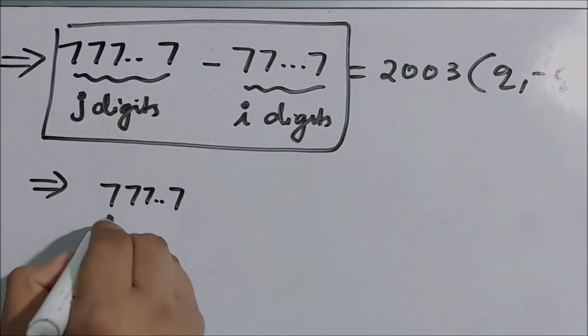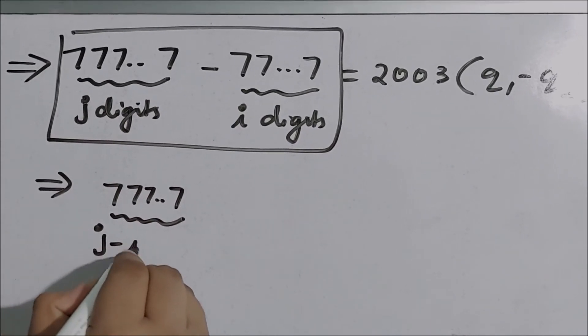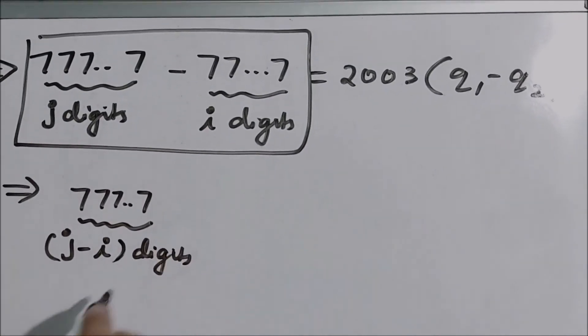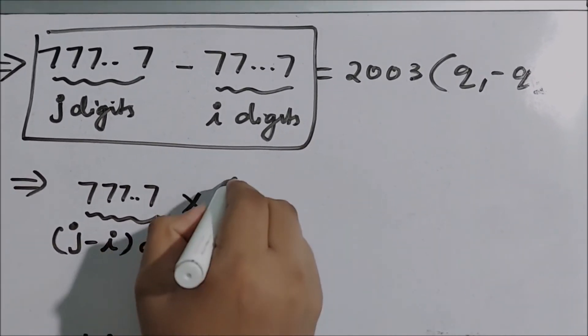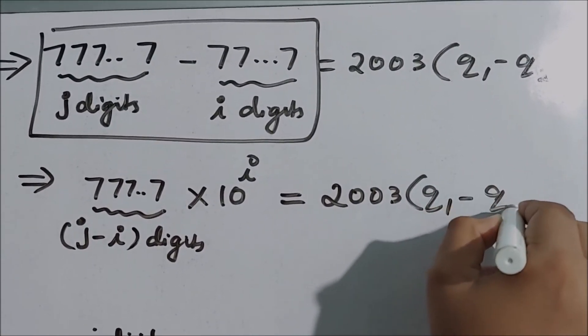That value will be nothing but j minus i digits of 7 followed by i digits of 0. The LHS has 777...7 with j minus i digits, times 10 raised to i. That is equal to 2003 into q1 minus q2.